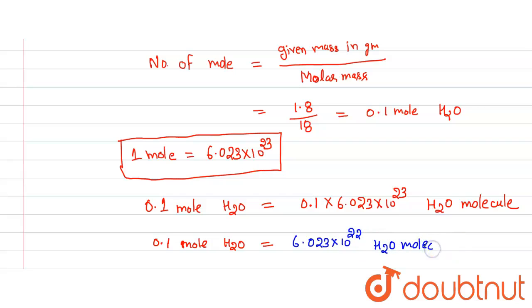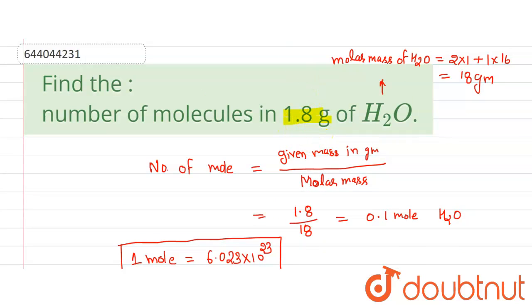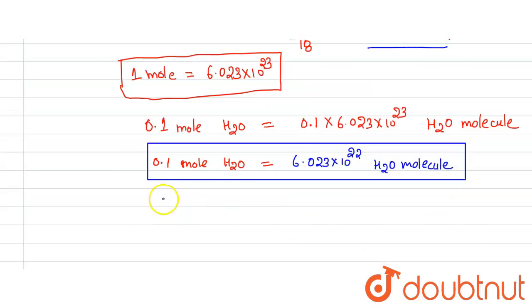This is our answer because 1.8 grams of H2O equals 0.1 mole of H2O, and 0.1 mole of H2O contains this number of H2O molecules. So this is our answer. Thank you, have a nice day.